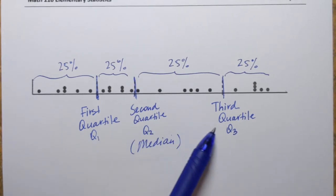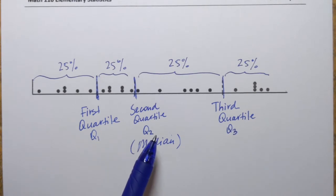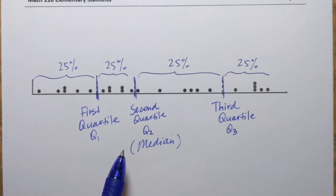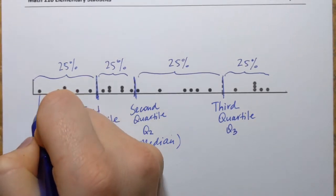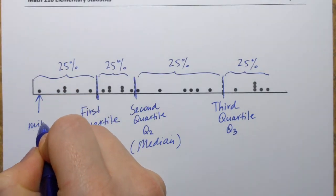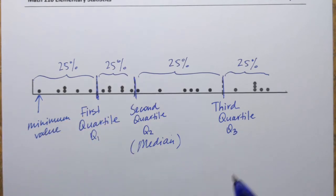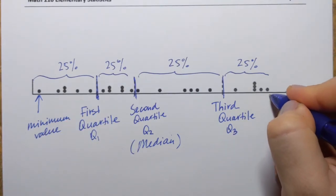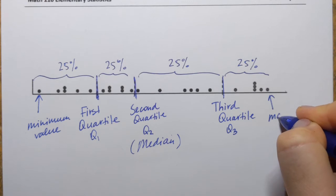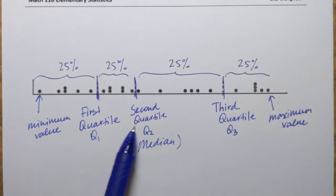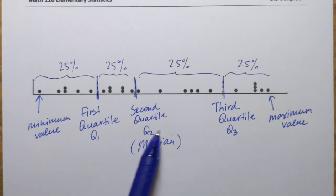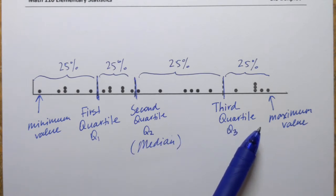So Q1, Q2 and Q3 will be used to construct a box plot, but there are two more values that I need. I need the minimum value or the smallest value of the data set. Well, this one is not that hard to find right here. And I will need the maximum value, it's right here on the right. And now with these five values or five numbers, I'm ready to construct a box plot.